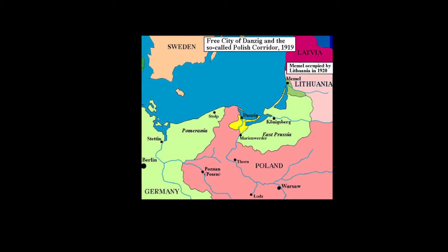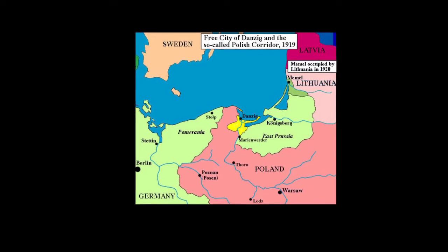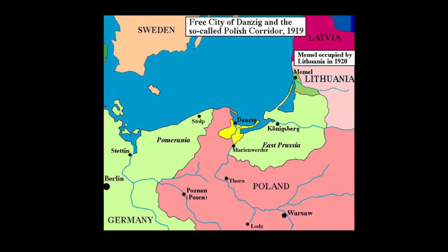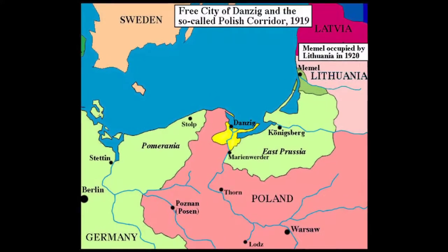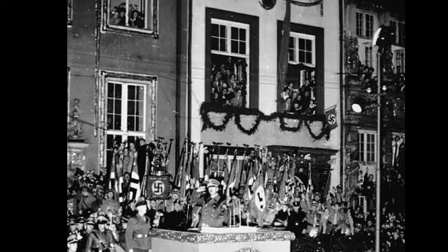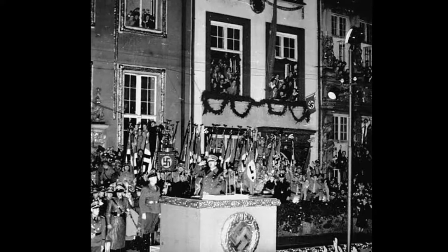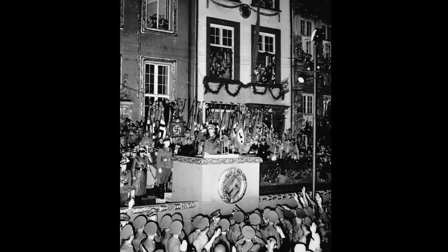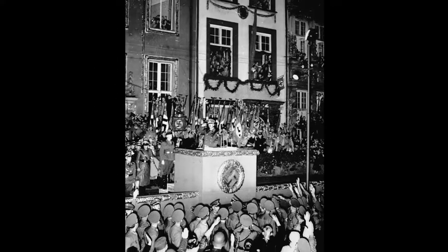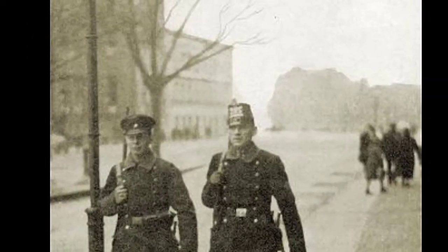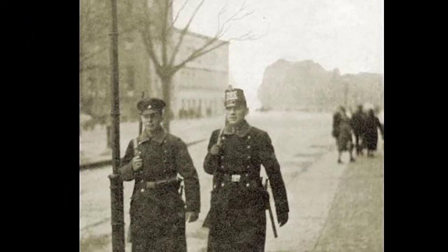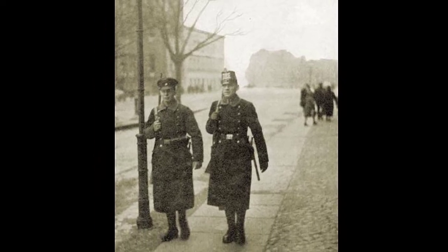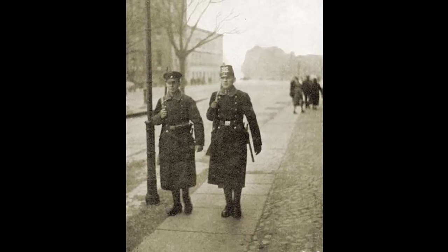The Free City was created in order to give Poland access to a sizable seaport. In 1938, the Free City's population of 410,000 was 98 percent German, one percent Polish, and one percent other. In the 1920 constituent assembly election, the Polish party received over six percent of the vote, but its percentage of votes later declined to about three percent.